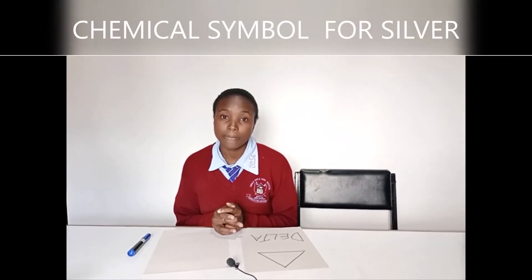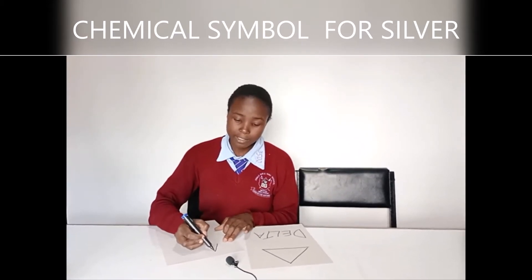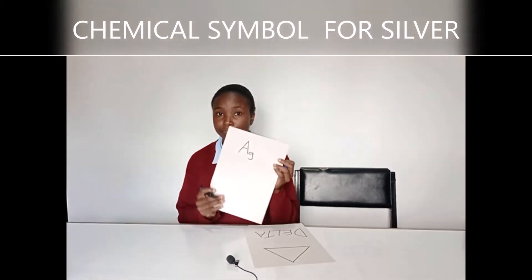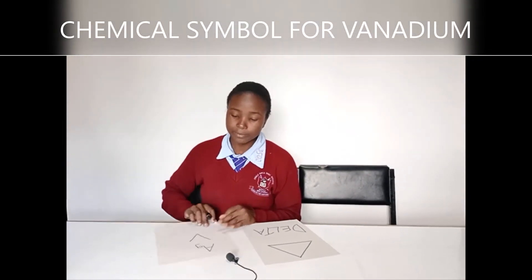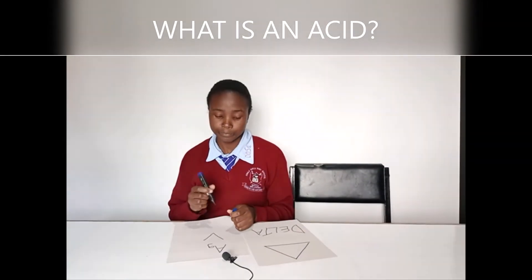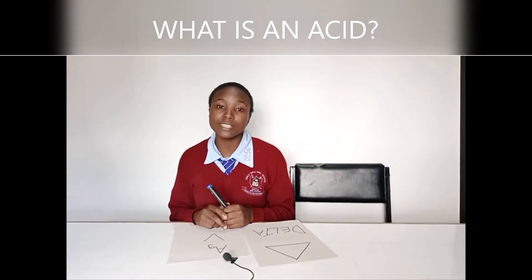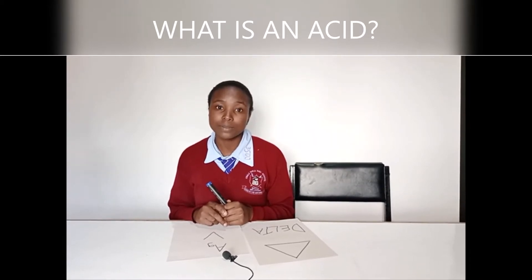Give the chemical symbol for silver. Silver is capital A, small g (Ag) — very correct. Give the chemical symbol for vanadium. Vanadium is capital V — very correct. What is an acid? An acid is a substance that when dissolved in water gives hydrogen ions as the only positively charged ion — very correct.